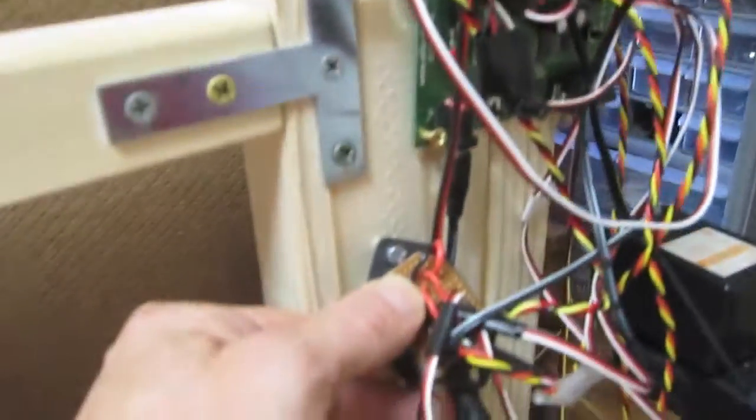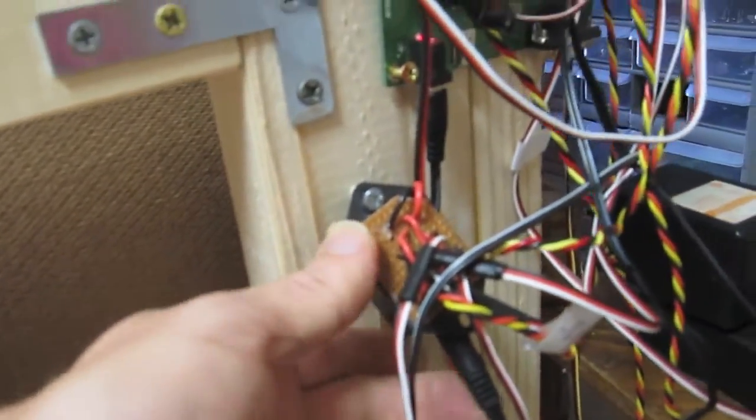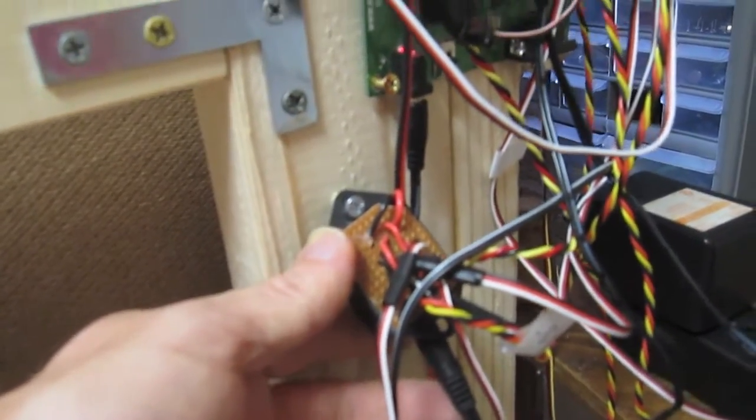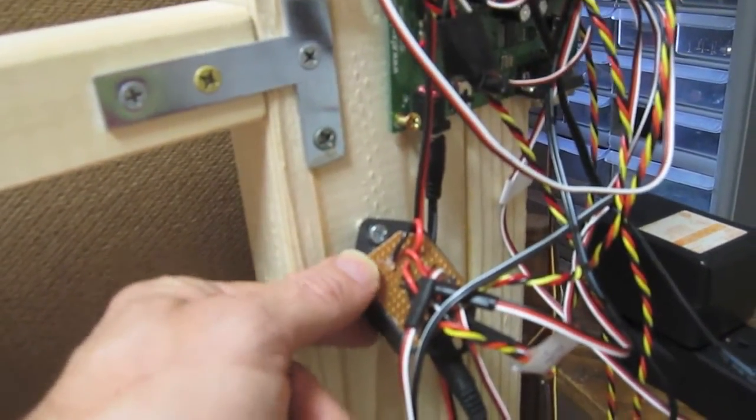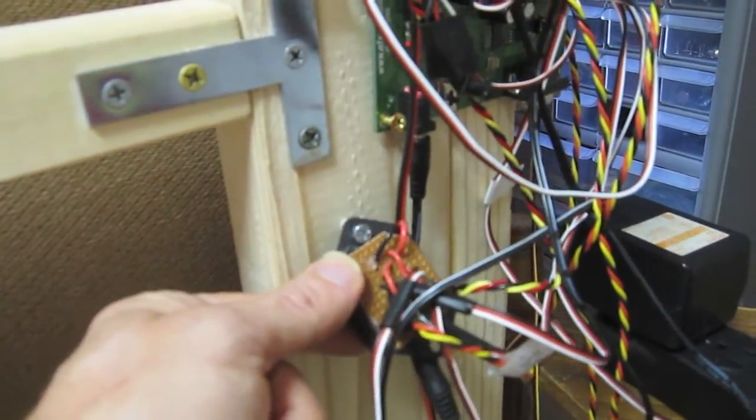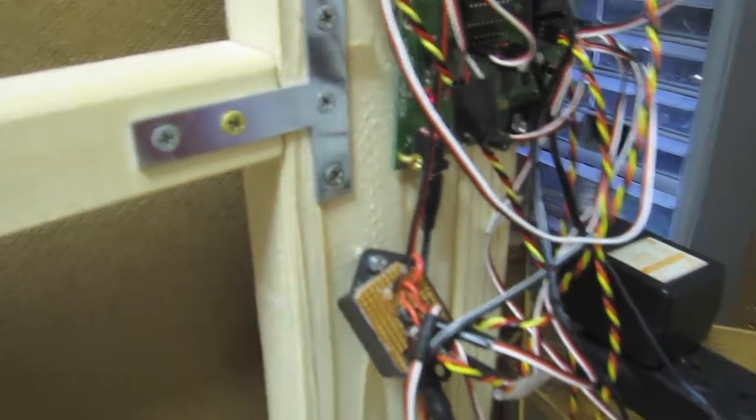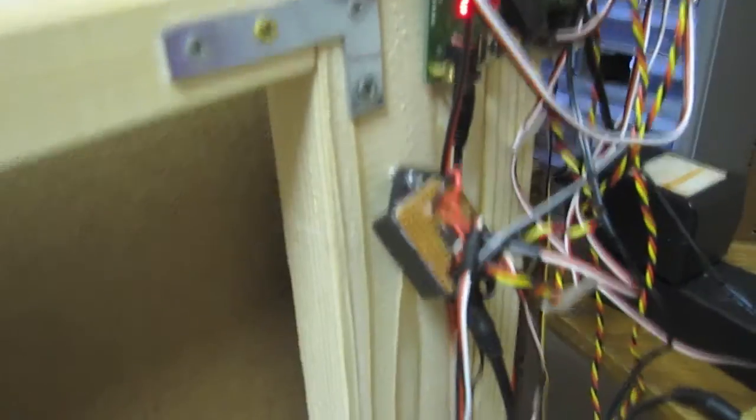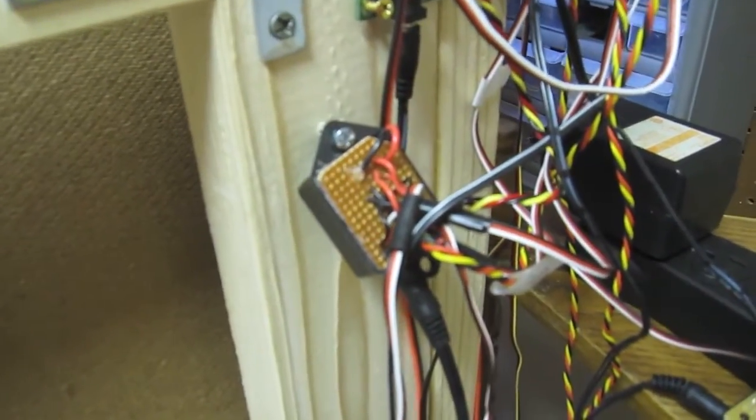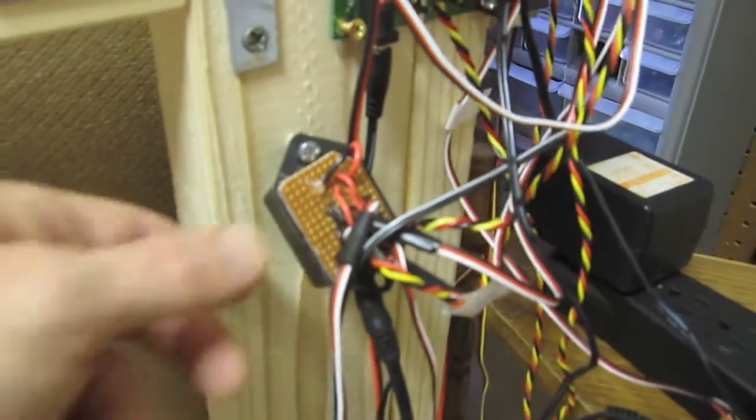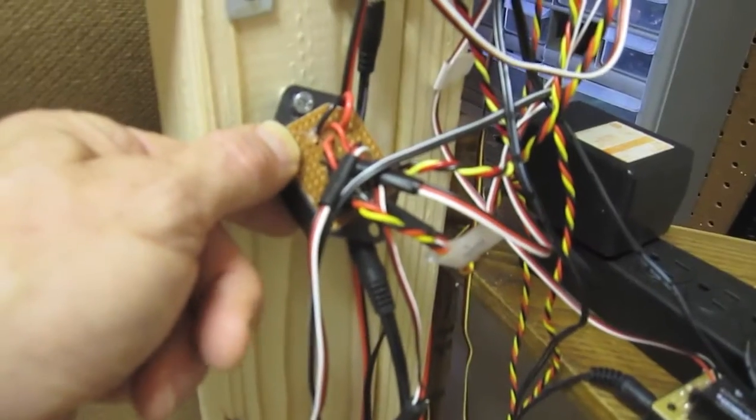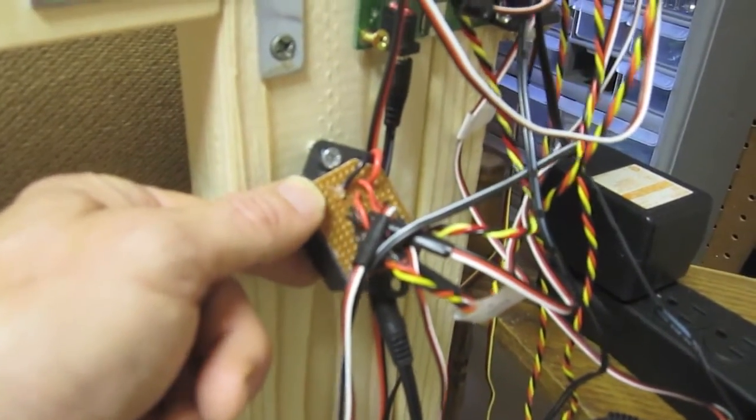This little guy here connected to a wall wart is powering the two servos and also the string of white lights. The white lights, there are 11 of those ultra bright LEDs. That's a little bit too much for that guy to power by itself. So I've got the alternate power source here and they're just basically wired up there.